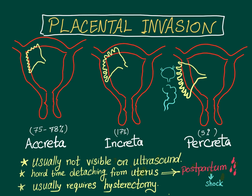The second type is placenta increta, where the placenta attaches to the myometrium, which is the muscular middle layer of the uterine wall. The third type is placenta percreta, where the placenta invades through the uterine serosa — the outer layer.